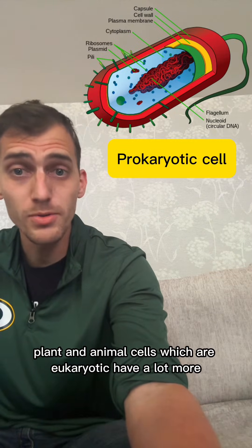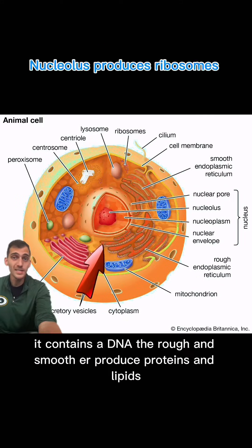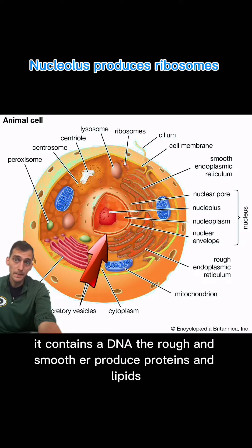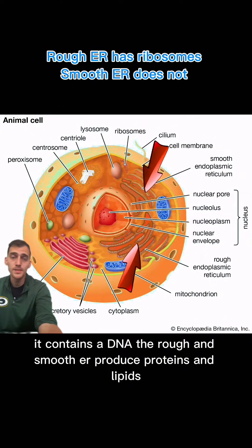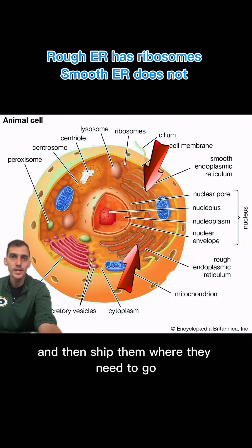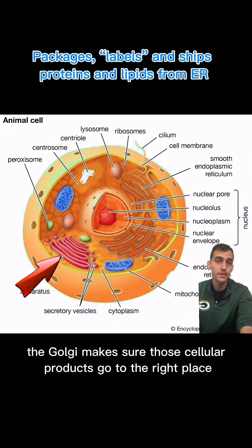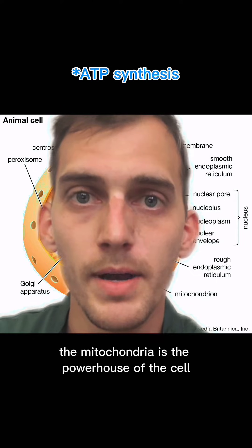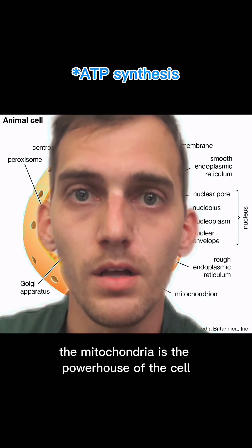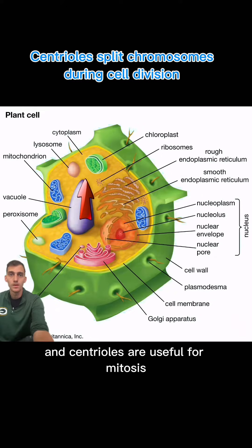Plant and animal cells, which are eukaryotic, have a lot more, though. We already talked about the nucleus — it contains the DNA. The rough and smooth ER produce proteins and lipids and then ship them where they need to go using vesicles. The Golgi makes sure those cellular products go to the right place. The mitochondrion is the powerhouse of the cell. Lysosomes and peroxisomes break stuff down, and centrioles are useful for mitosis.